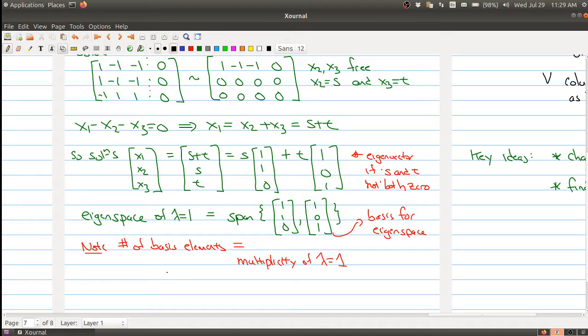Now, a huge warning here: this is not always true. But there is a relationship between the number of basis elements of your eigenspace and the multiplicity of your eigenvalue. Normally, this will be an inequality. We're going to get into all these details in the next couple of lectures when we talk about diagonalization.